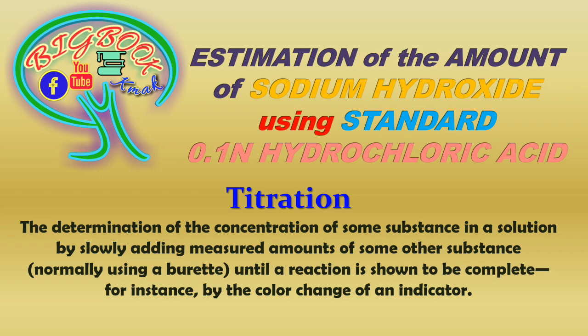Titration is the determination of the concentration of some substance in a solution by slowly adding measured amounts of some other substance until a reaction is shown to be complete — for instance, by the color change of an indicator. By the definition itself, it is very clear that there will be two main reactants which are going to react to give rise to a new product.